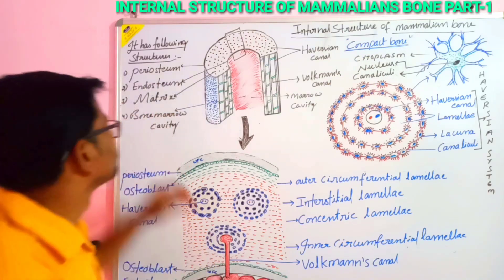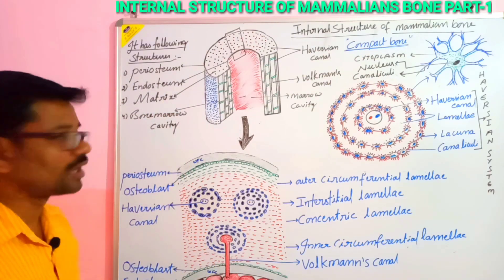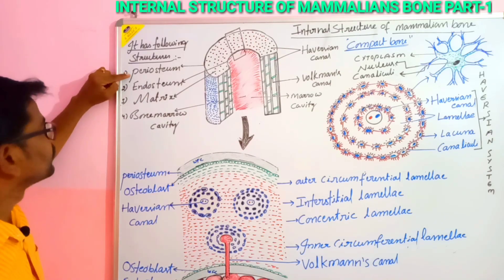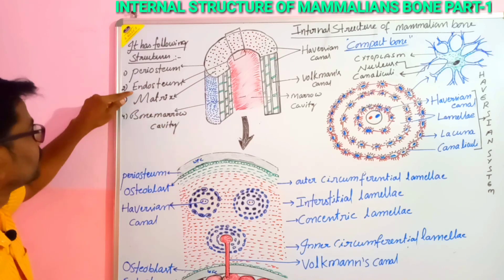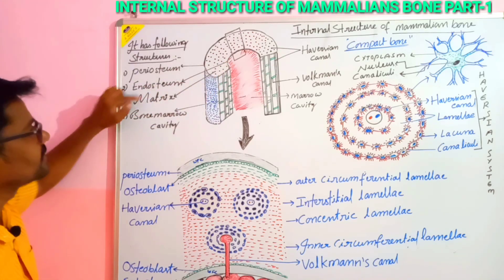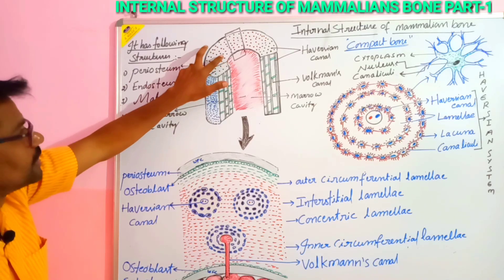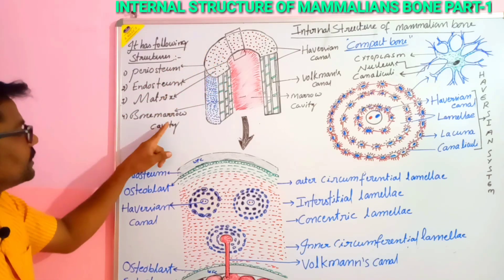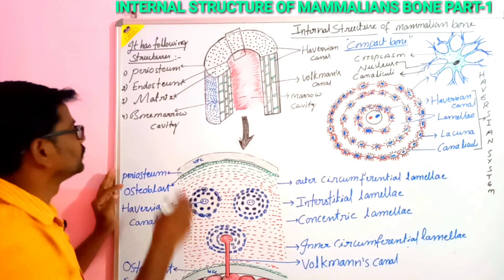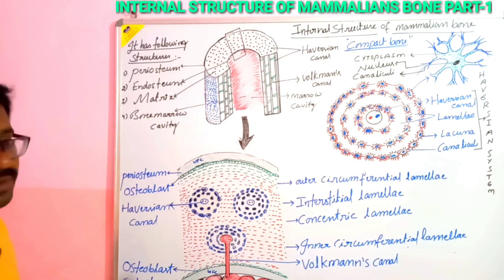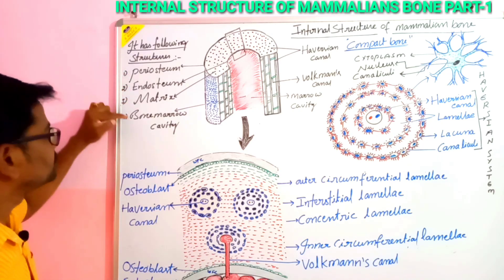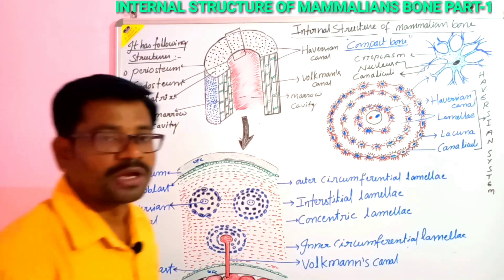The internal structure of compact bone — that is, the diaphysis — has four important structures. First is the periosteum, which is the outermost layer. Second is the endosteum, which is the innermost layer. Third is the matrix, present between the periosteum and endosteum. And fourth is the bone marrow cavity, which is the interior space present inside the bone.